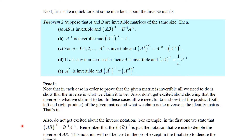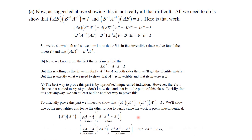To prove each of these, we just need to show that the proposed inverse satisfies the definition. For property (a), we show (AB)(B⁻¹A⁻¹) = I. Using the associative property, we group B times B⁻¹ = I, leaving AA⁻¹ = I. From the other side, B⁻¹A⁻¹ times AB also yields I using the associative property twice. So the inverse of AB is B⁻¹A⁻¹.